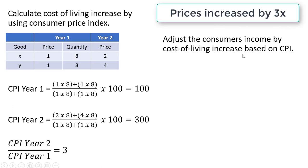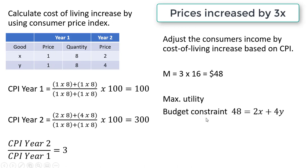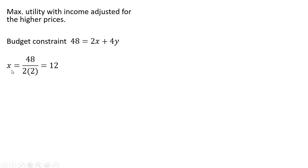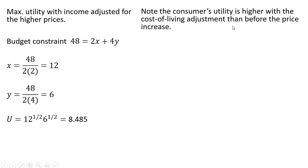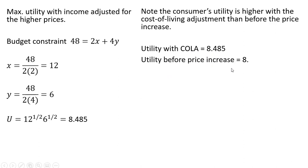So if we adjust the consumer's income by the cost of living increase based on the CPI, the consumer would now have $48 of income — three times 16. Maximizing utility with this new budget constraint: plugging 48 for income into the demand for good X and dividing by two times the higher price of good X gives 12 units. Similarly, the consumer would buy six units of good Y. Utility at this level is 8.485 — higher than the utility of 8 before the price increase.